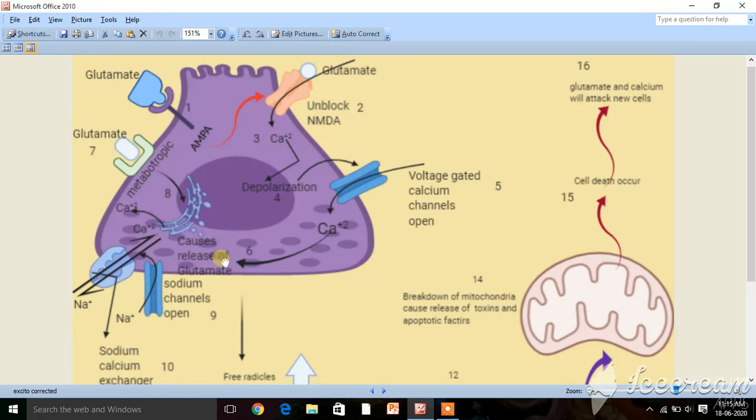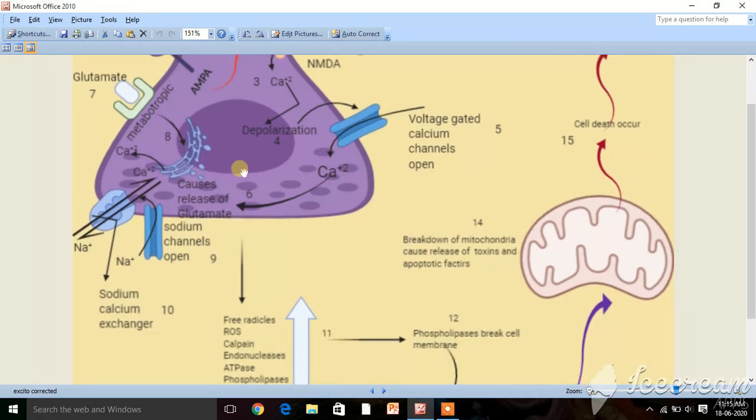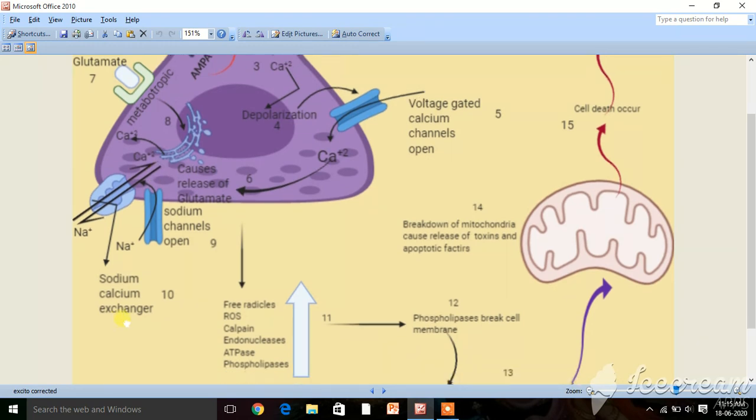The released glutamate will bind to the metabotropic receptors, and this binding affects the endoplasmic reticulum and stimulates calcium release from the endoplasmic reticulum. This calcium causes opening of sodium channels and a lot of sodium ions enter the cell. These sodium ions are exchanged with calcium via the sodium-calcium exchanger.